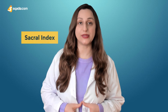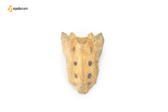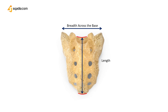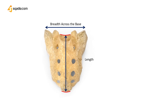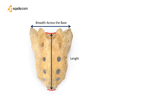First of all, calculate the sacral index. For this, you will measure the breadth across the base and the length from the promontory — which is the structure here — to the apex. You will get the formula: breadth across the base divided by length from the promontory to the apex, multiplied by 100.